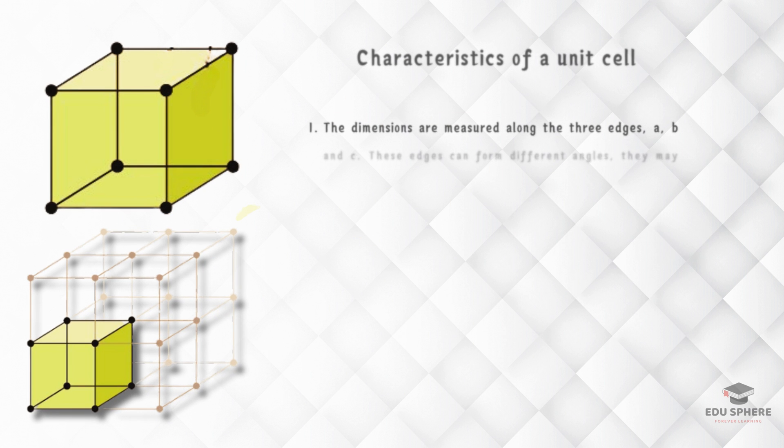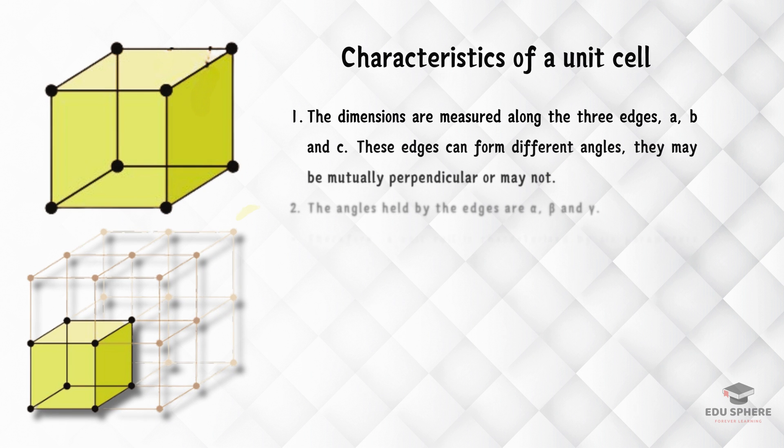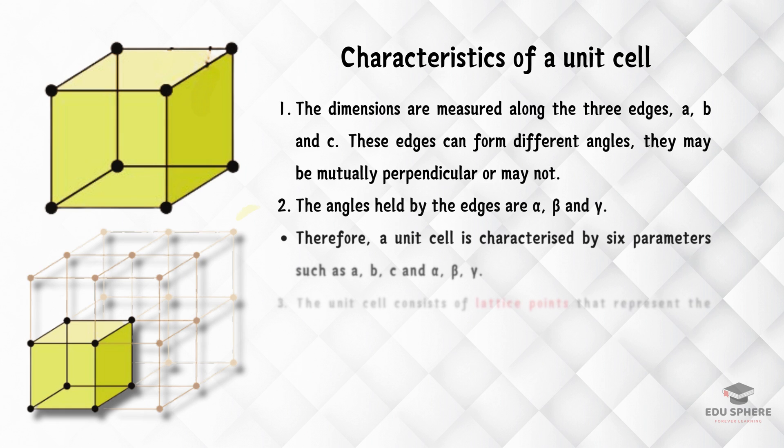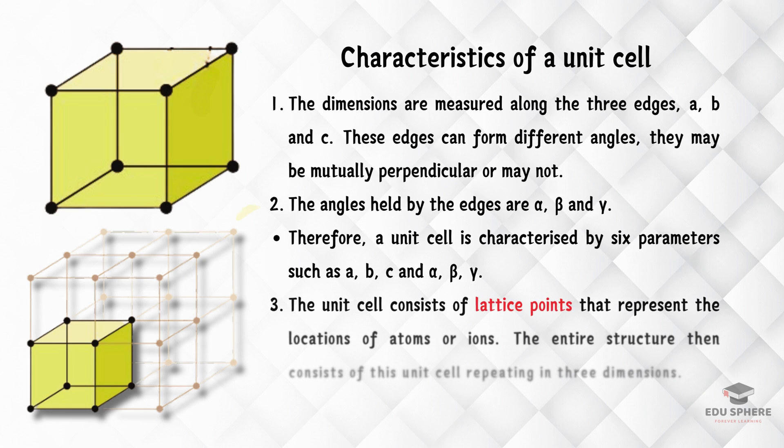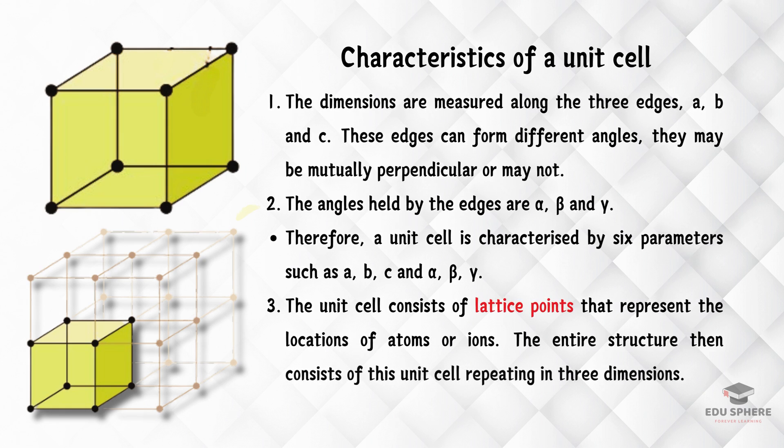Understanding the different types of unit cells becomes crucial as we explore materials science and engineering. These variations depend on two key factors: one, the arrangement of lattice points within the cell, and two, the overall geometrical shape of the cell itself.